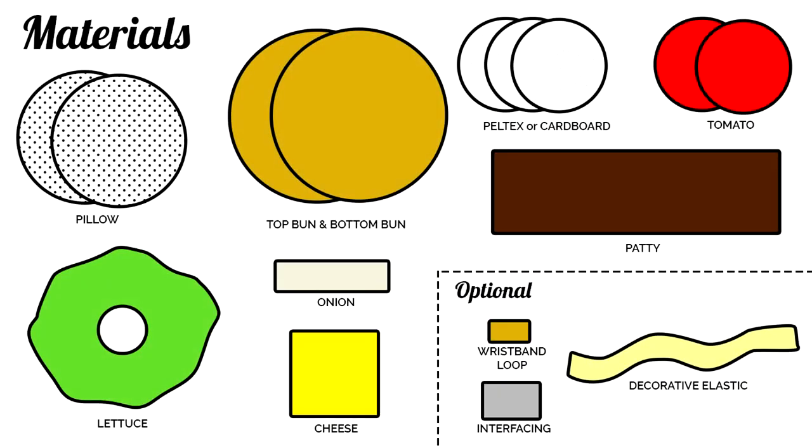All righty. Here's our material list. One sheet of felt in each of the following colors: tan, brown, yellow, red, white, and green. A small scrap of fusible interfacing, approximately 2 inches by 3 inches. A scrap of woven fabric, approximately 4 inches by 8 inches.